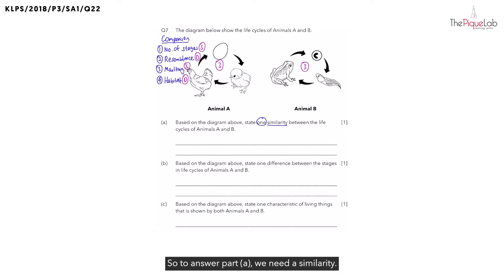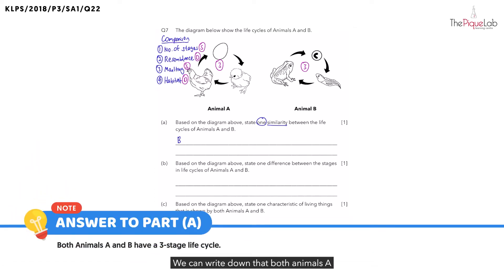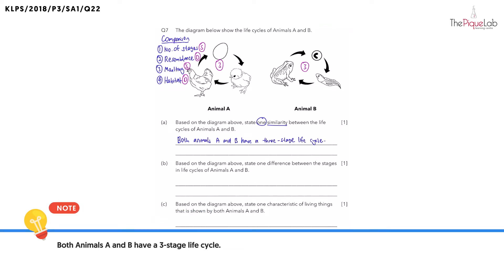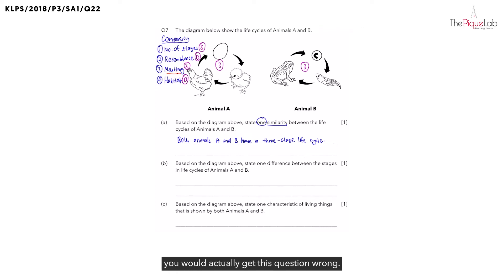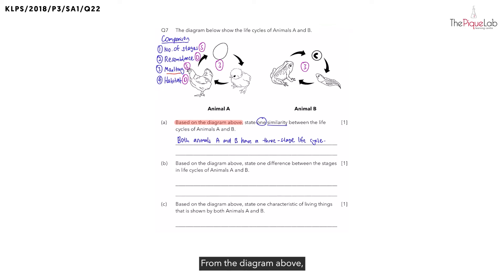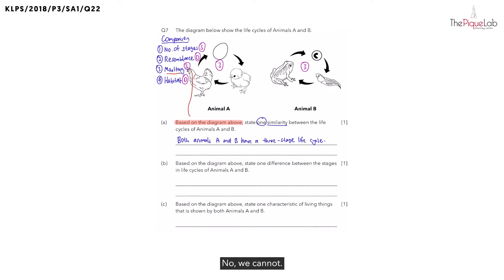To answer part A, we need a similarity. Can we write the number of stages? Definitely. We can write down that both animals A and B have a three-stage life cycle. But is this the only similarity we can choose? Can we also write that both animals A and B do not undergo molting? If you write molting as your answer, you would actually get this question wrong. From part A, look at these keywords — they said 'based on the diagram above.' From the diagram above, can we tell whether the young of animal A or animal B undergoes molting? No, we cannot. And because we cannot tell, we cannot write molting as our answer.